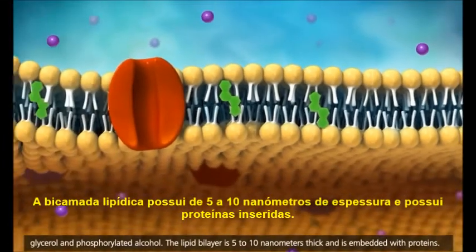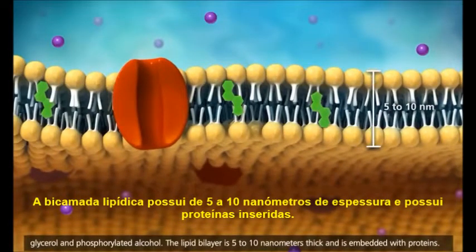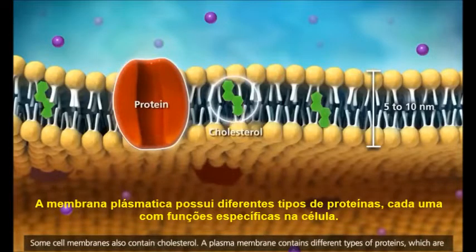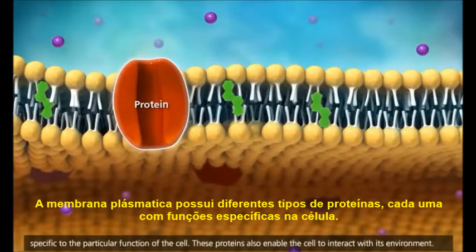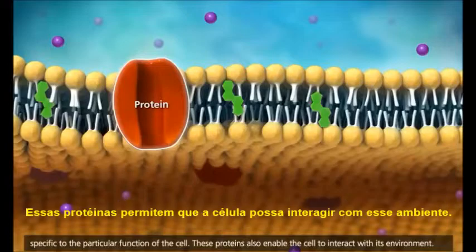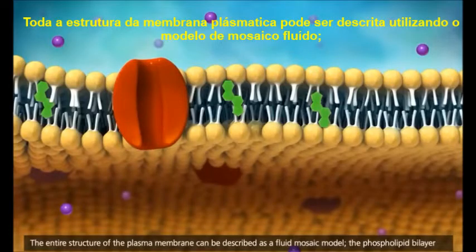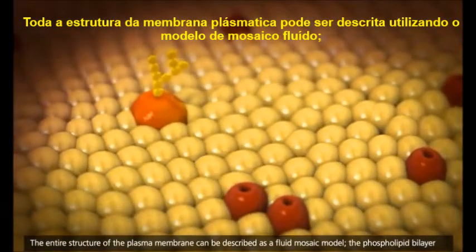The lipid bilayer is 5 to 10 nanometers thick and is embedded with proteins. Some cell membranes also contain cholesterol. A plasma membrane contains different types of proteins which are specific to the particular function of the cell. These proteins also enable the cell to interact with its environment. The entire structure of the plasma membrane can be described as a fluid-mosaic model.